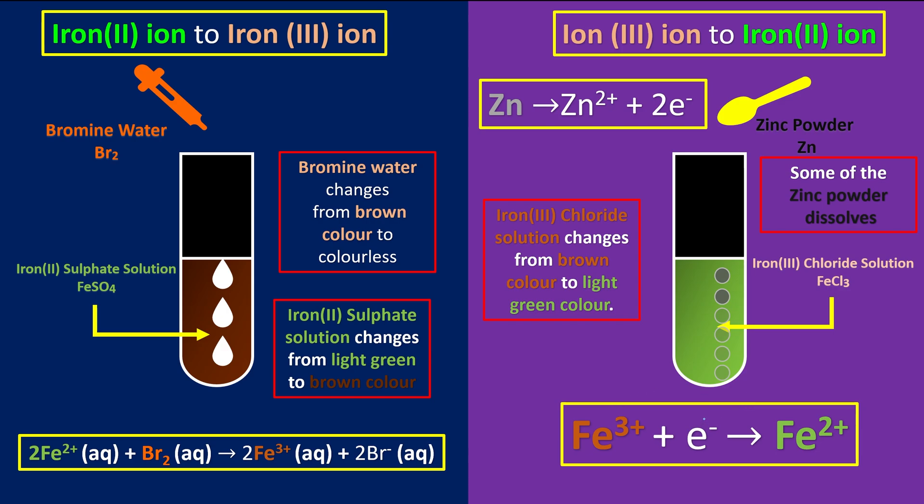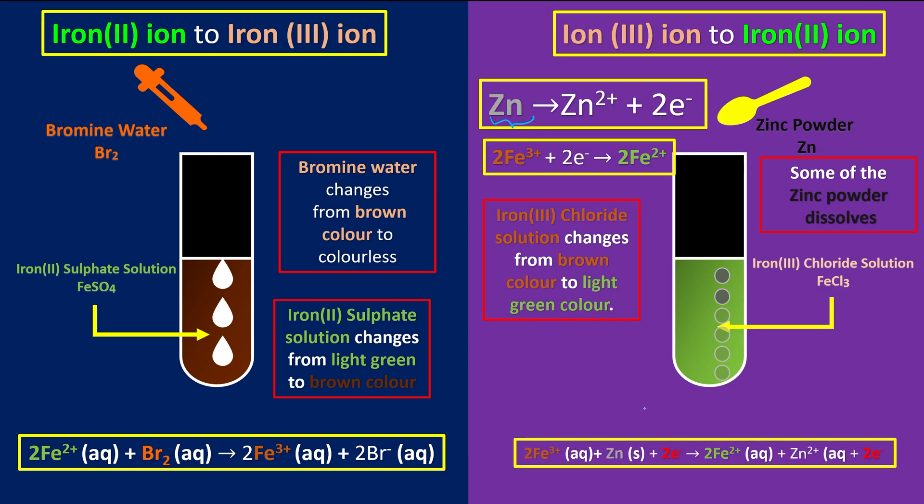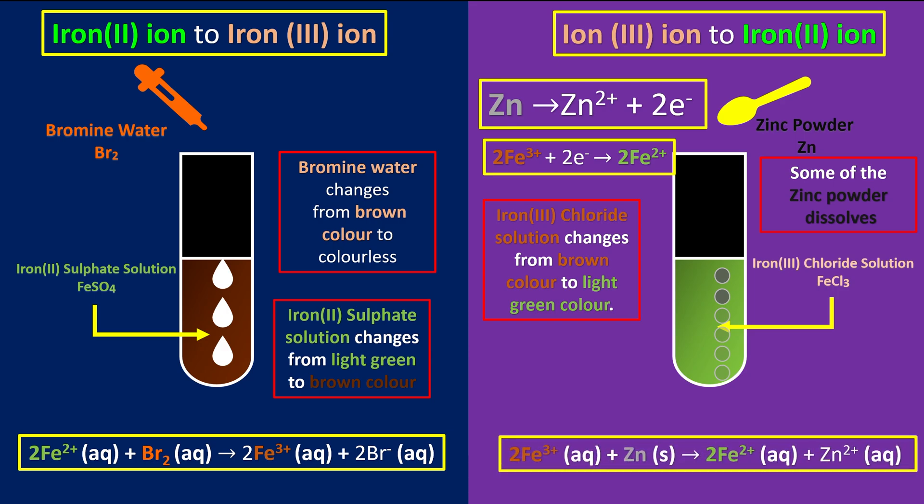So same thing again, you realize that the electrons are eventually not balanced. So how to balance it? We're going to times 2 for the reduction half equation, which will become like this. And now we can just merge together to form the overall ionic equation and remove the electrons. And this is our final form of the overall ionic equation.